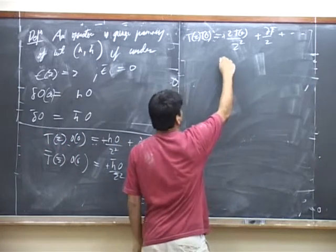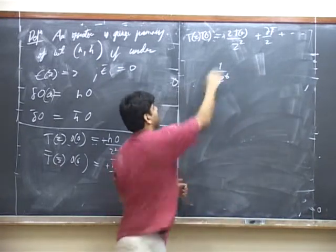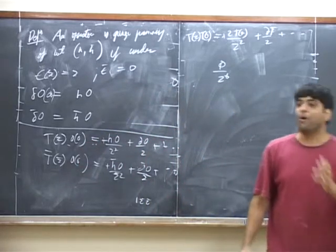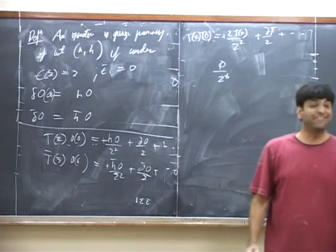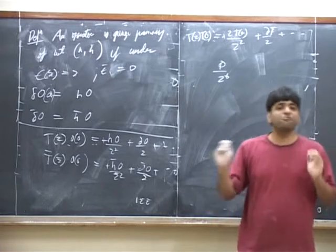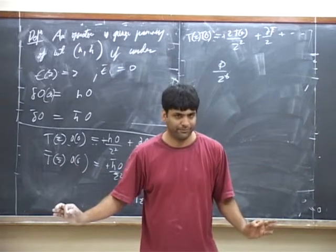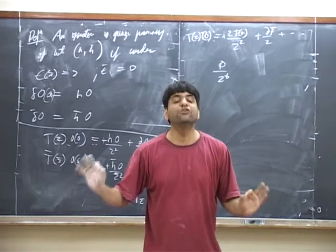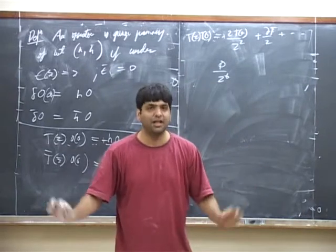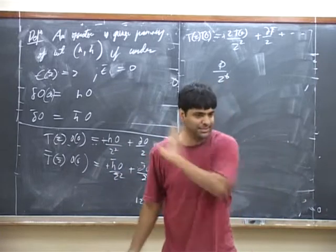Now, the first question I ask is, could you have something like 1 over z to the 6 times something? But if you had something like 1 over z to the 6 times something, it would have to be an operator of negative dimension, so that the net dimension adds up to 4. We will prove at the next class or the class after that, that in any unitary conformal field theory, there is no operator of dimension less than 0, no local operator of dimension less than 0.